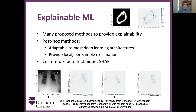The current de facto post-hoc technique is SHAP, and we have some SHAP examples on this slide. In the top right there's an MNIST sample, and on the bottom we have a chest X-ray sample from the MIMIC-CXR dataset. These are the SHAP values for a sample on a DenseNet-121 model trained with random seed 2, and here are the SHAP values for the same sample from a DenseNet-121 model trained with random seed 5. Here we have the differences between the SHAP values of the two models — as you can see, the differences are quite significant.